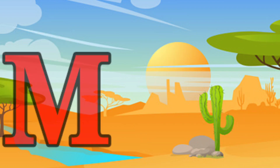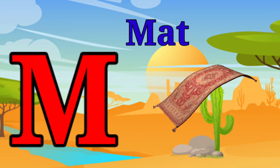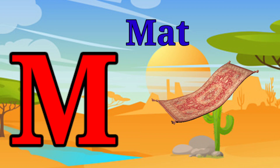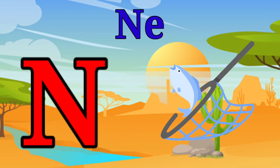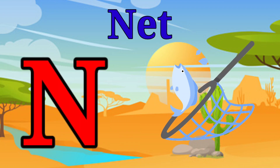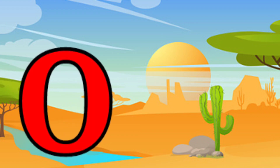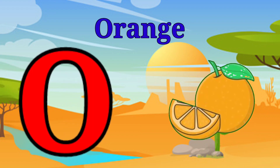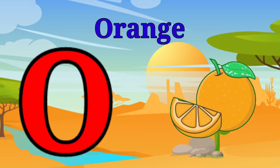M is for mat, m-m-mat. N is for net, n-n-net. O is for orange, o-o-orange.